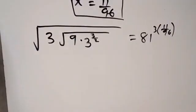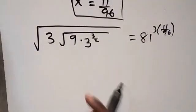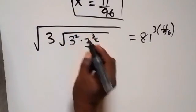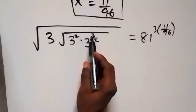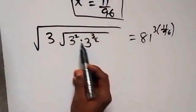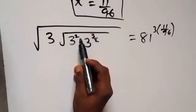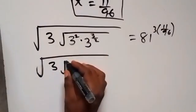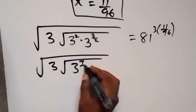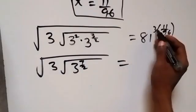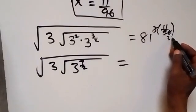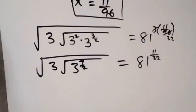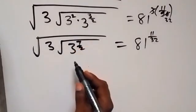We can write 9 as 3 raised to power 2, and then when we have the same base we add the powers: this becomes 3 raised to power 7 over 2. So we can write this as root 3, then root of 3 raised to power 7 over 2, which equals — since 3 goes into 96 giving 32 — 81 raised to power 11 over 32.